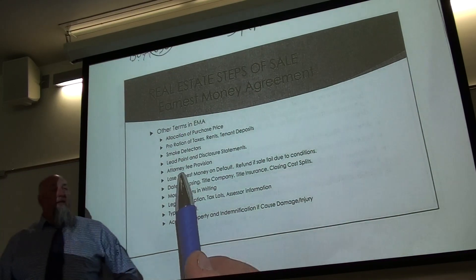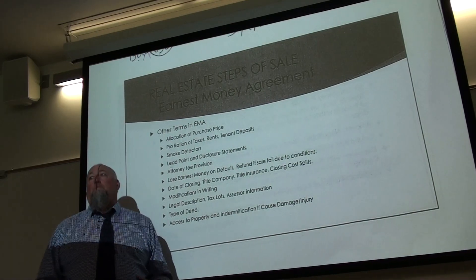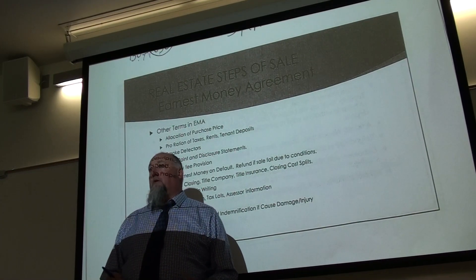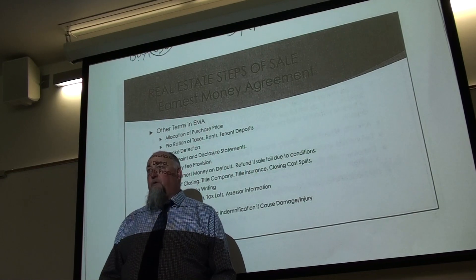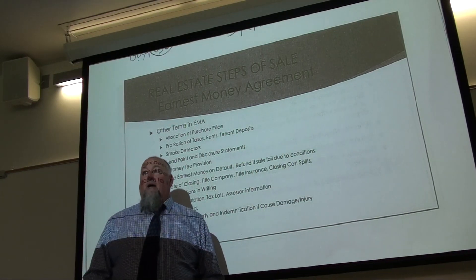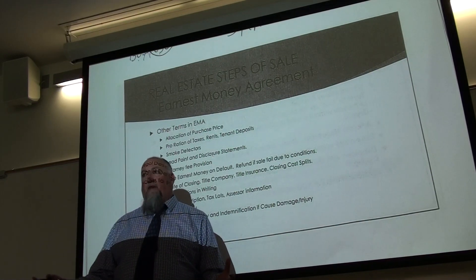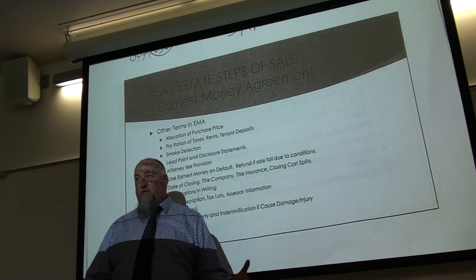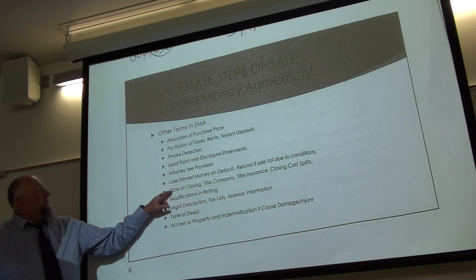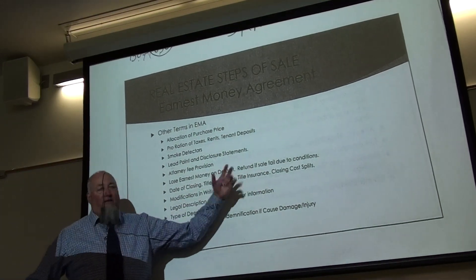You want an attorney fee provision in your contract — that is, if something happens and you go to court, the winner will have their attorney fees paid. In Oregon, if you don't have that in your contract you're not entitled to attorney fees. That could be a huge issue: if you're owed $10,000 but pay $20,000 to an attorney and can't recover it, you're losing money. It's a very important provision in any contract.